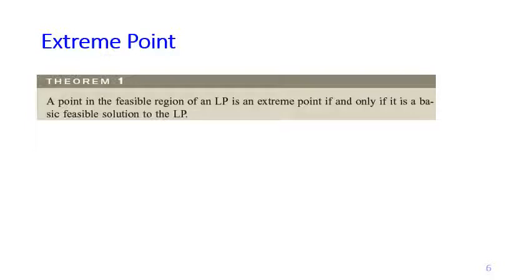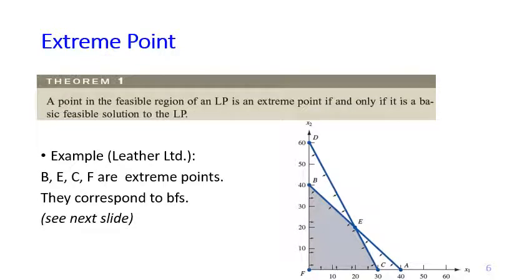Basic feasible solutions are related to the concept of extreme points. The theorem states that a point in the feasible region of a linear program is an extreme point if and only if it is a basic feasible solution. Looking at a graphical representation of a feasible region, points b, c, e, and f are all extreme points and correspondingly are all basic feasible solutions.